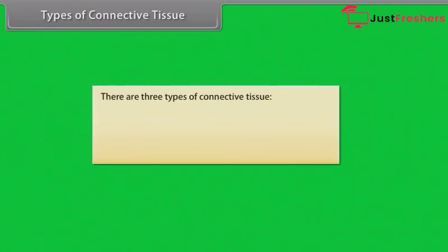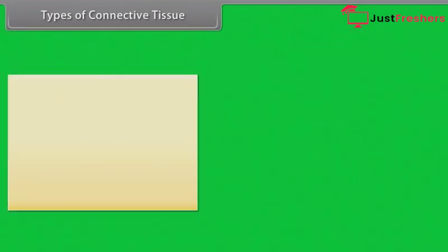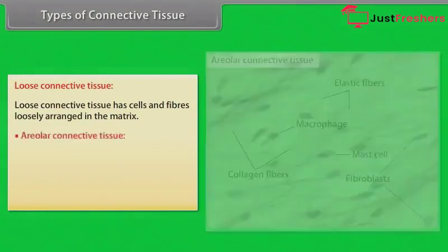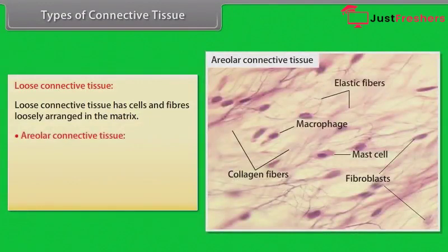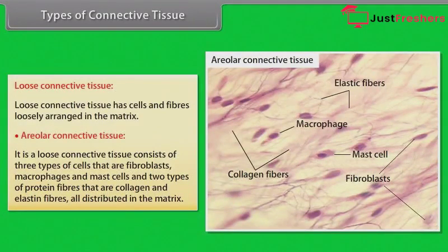There are three types of connective tissue: loose connective tissue, dense connective tissue, and specialized connective tissue. Loose connective tissue has cells and fibers loosely arranged in the matrix. Areolar connective tissue consists of three types of cells — fibroblasts, macrophages, and mast cells — and two types of protein fibers — collagen and elastin fibers — all distributed in the matrix.